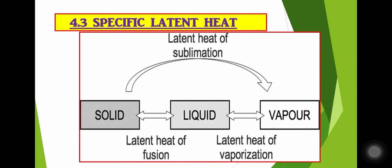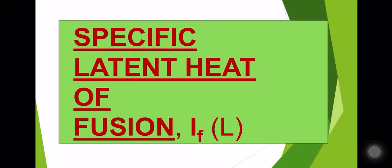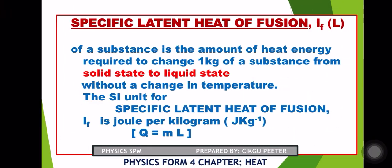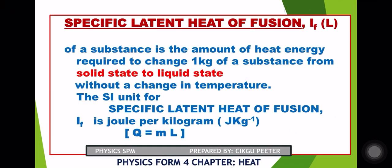When we describe specific latent heat of fusion — latent heat is the amount of heat energy needed when a substance goes through changes in state of matter. The specific latent heat of fusion is the amount of heat energy needed by every one kg mass of a substance to change the state of matter from solid to liquid. The word 'specific' means we must include the mass.